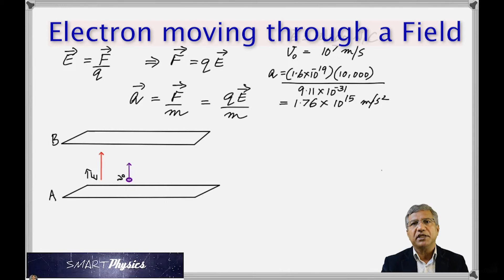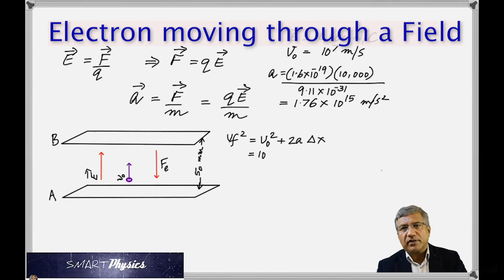So now if you're asked to find the final velocity with which the electron hits the plate B, or reaches the plate B, you got to have the distance here, which I'm going to assume to be 50 millimeters. And the force acting on the electron, as I've explained, is opposite to the direction of the electric field by definition. And so now you can find the final velocity using this formula from kinematics. Vf squared is V naught squared plus 2a delta x.